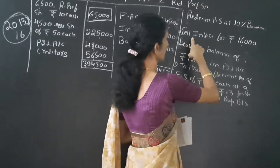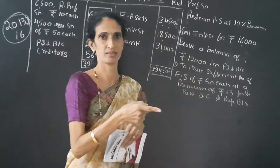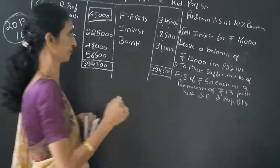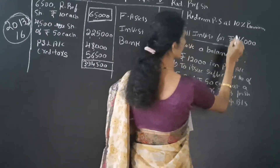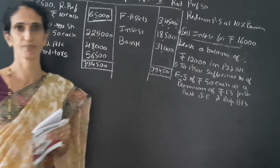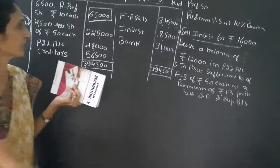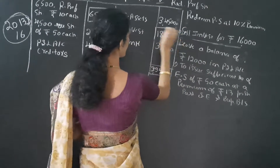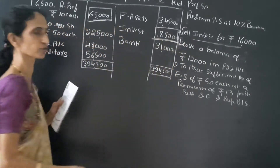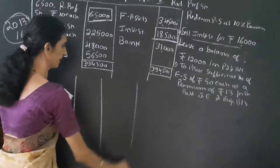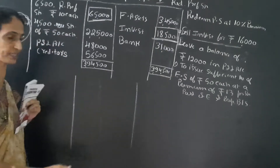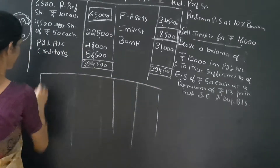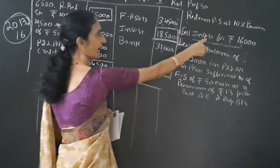Before redeeming the shares, we have to see how the shares are being redeemed. It is given: sell the investment for Rs. 16,000. For redeeming the shares, we have to sell the investment for Rs. 16,000. See the balance sheet — here investment is given as Rs. 18,500. So the first journal entry will be for selling the investment.